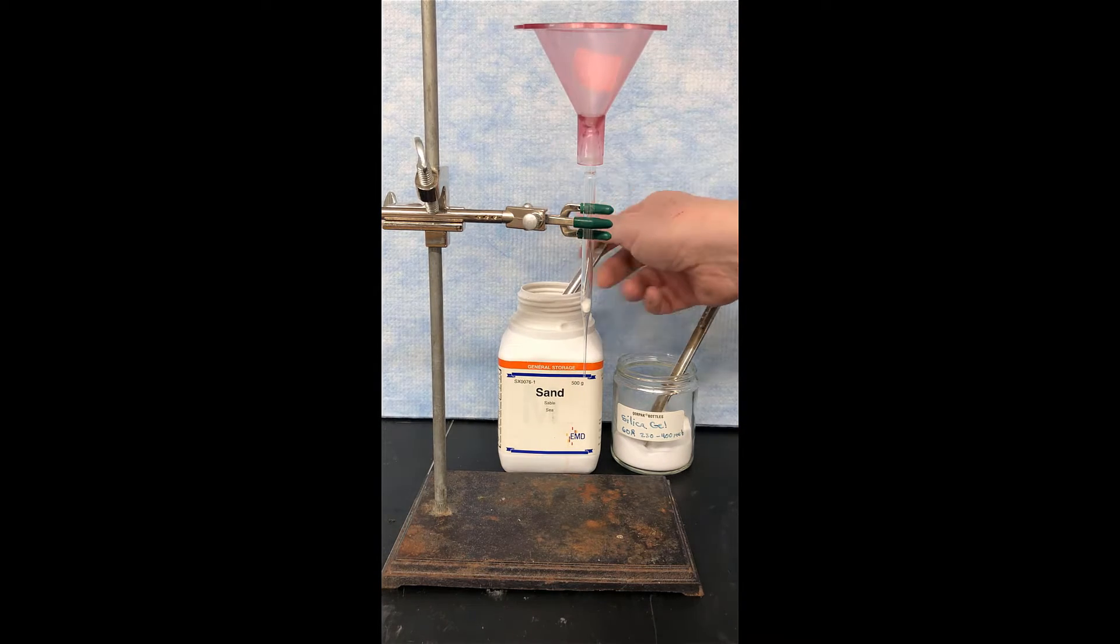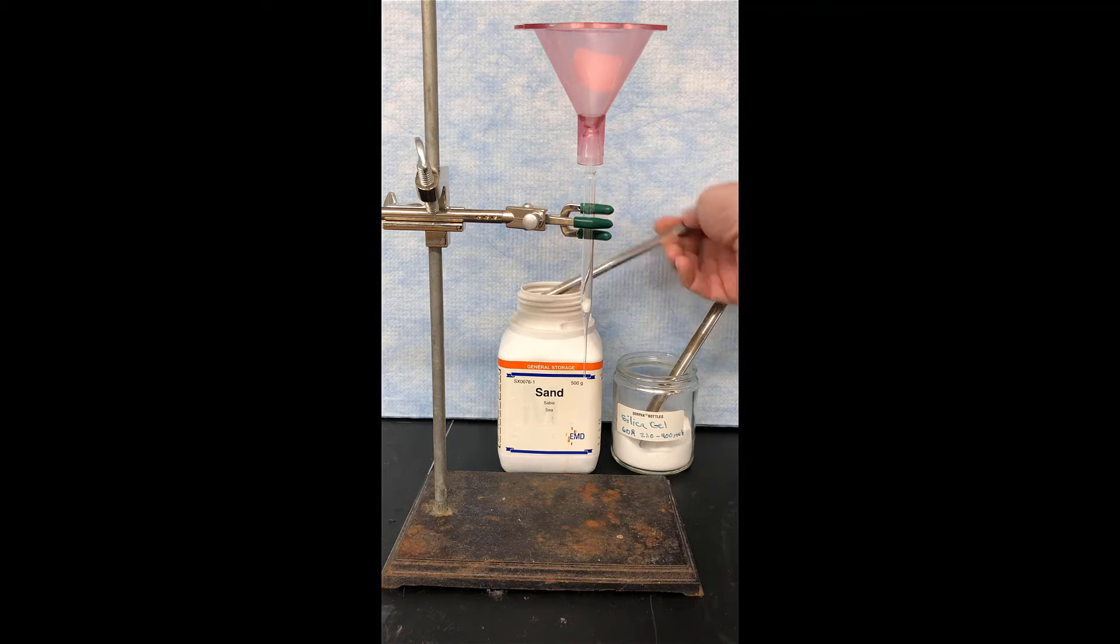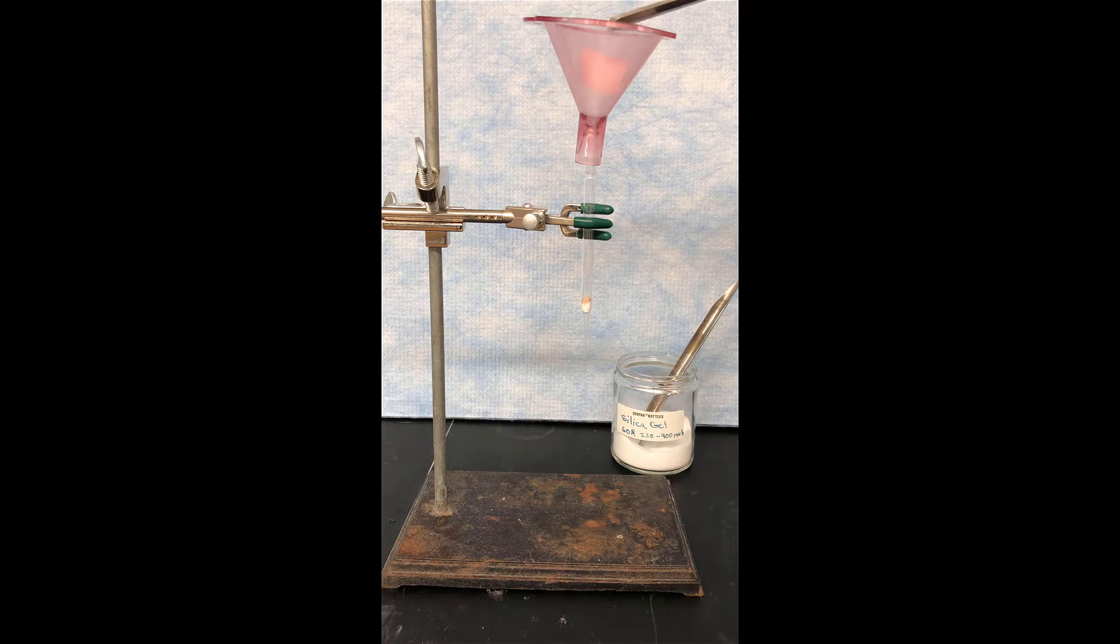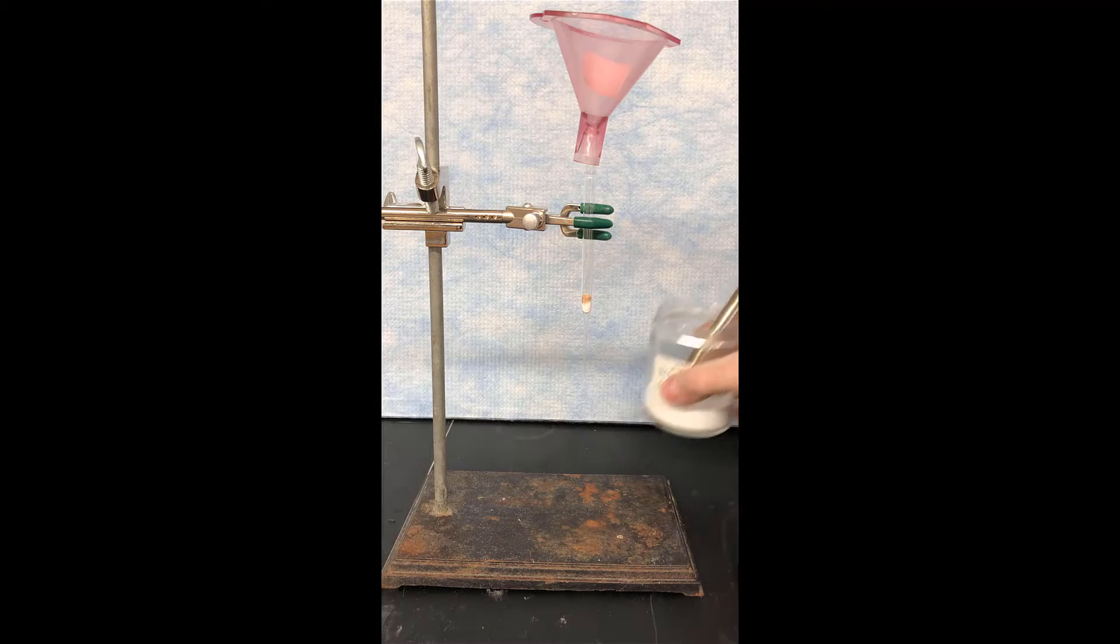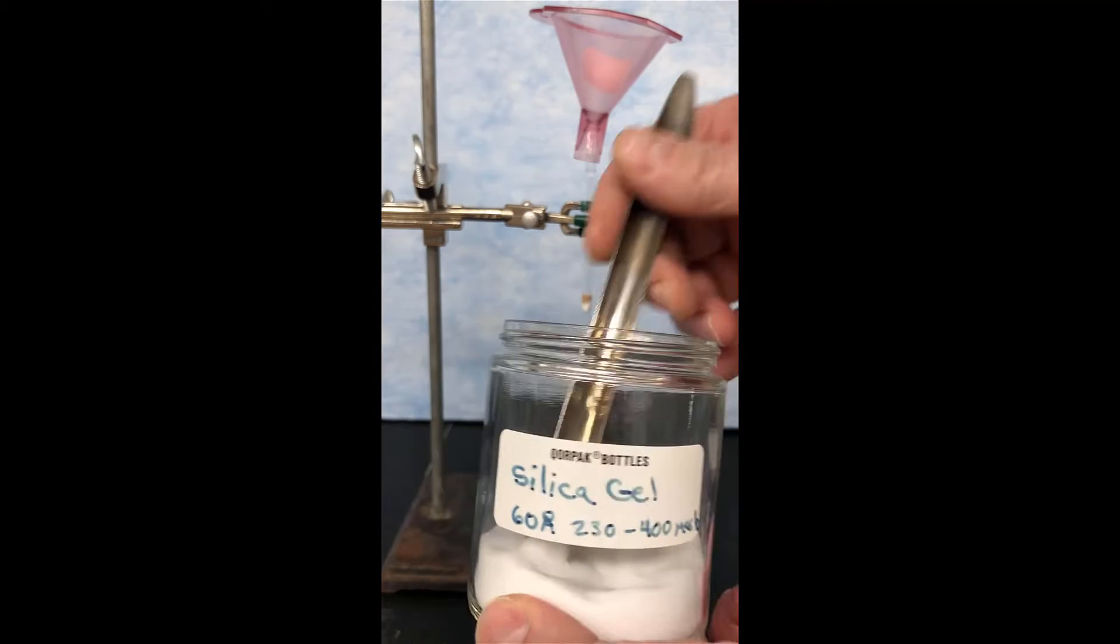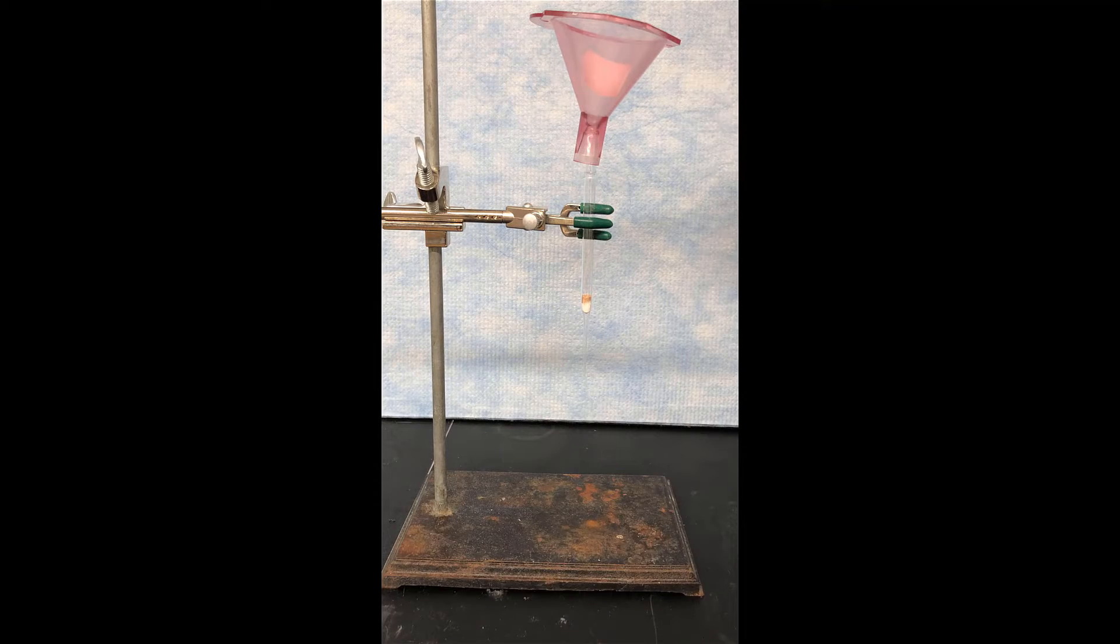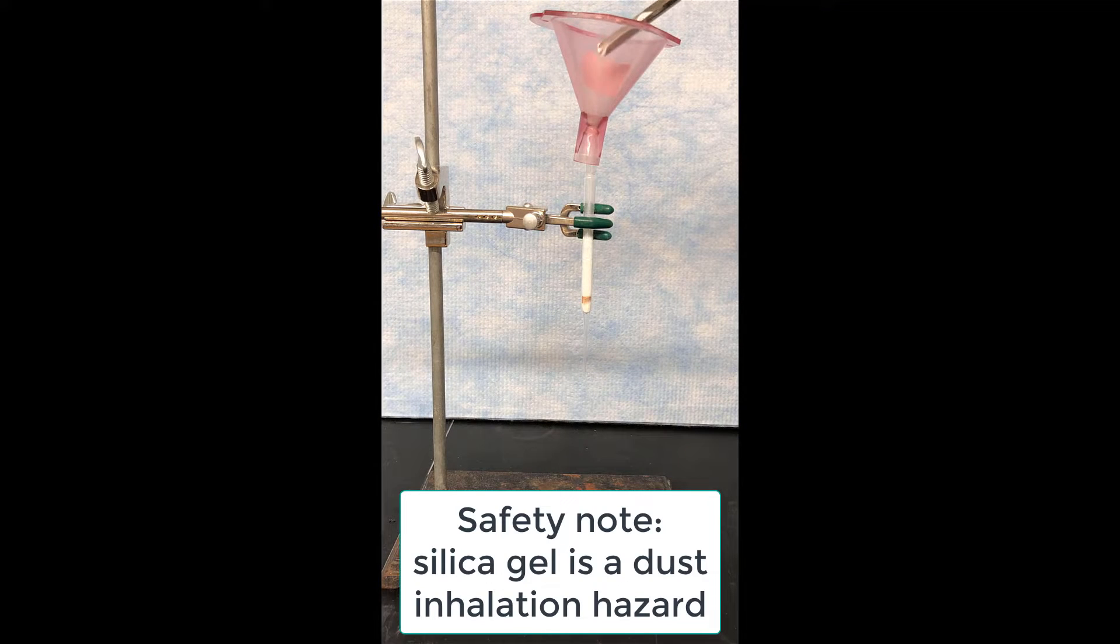We'll add some sand. The sand supports the stationary phase, which is coming next, so two to three millimeters of sand. Now we put in silica gel. That's the stationary phase. You've got to be a bit careful with this because it's dusty, so avoid breathing in dust from silica gel.